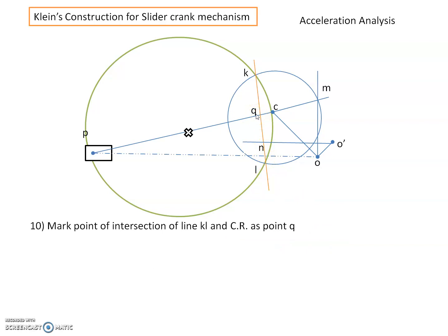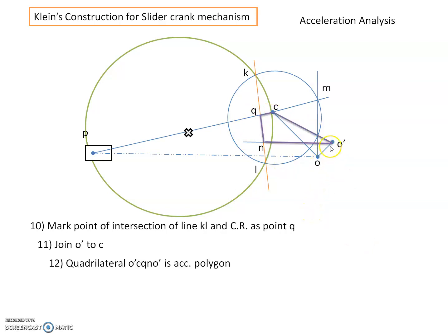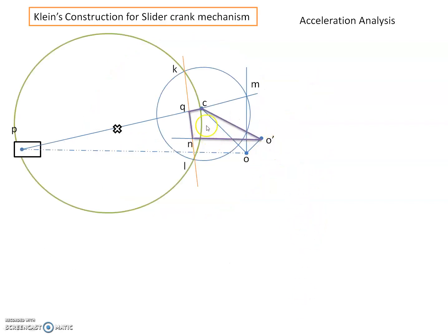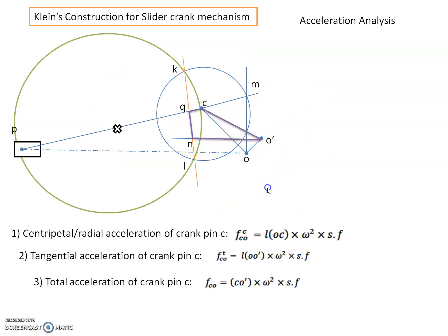Next, mark point Q as the point of intersection of KL with the connecting rod PC. Join O' to C. The quadrilateral O'CQN represents the acceleration polygon for the given reciprocating engine mechanism in which crank OC rotates with non-uniform speed. From this acceleration polygon, we find the unknown accelerations. For crank OC, we have determined acceleration of C relative to O, which has two components: radial component F_C(CO) and tangential component F_T(CO).